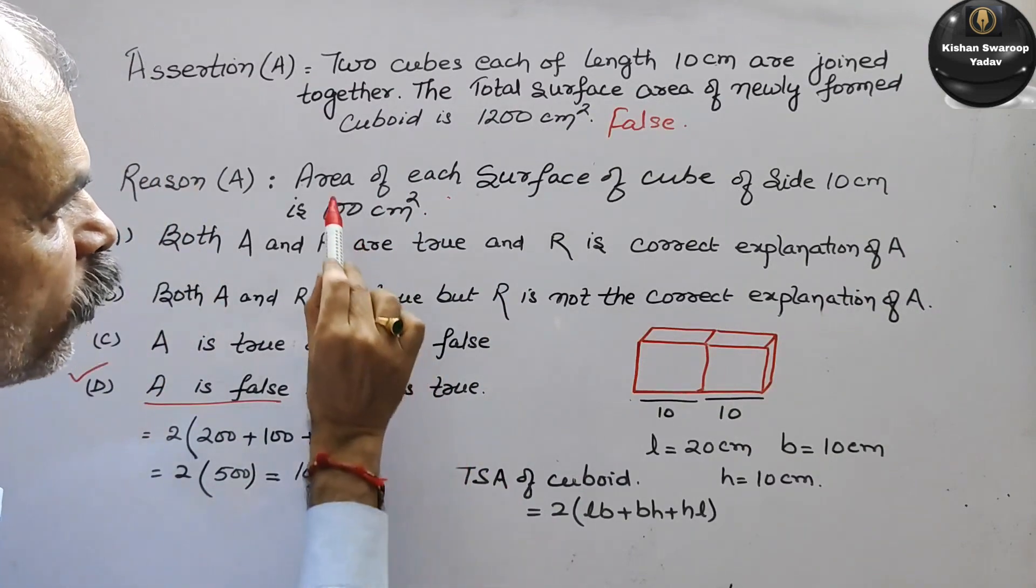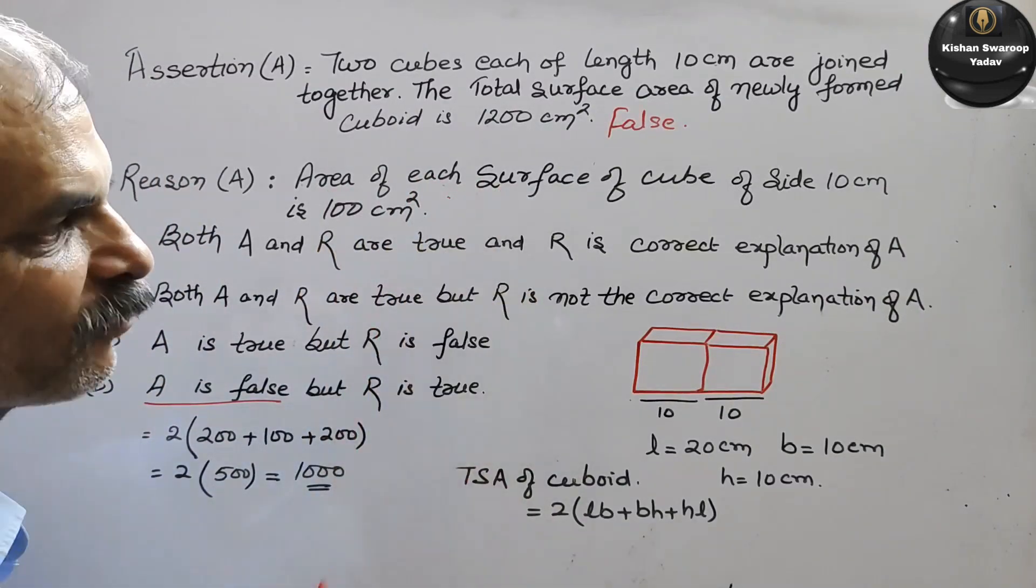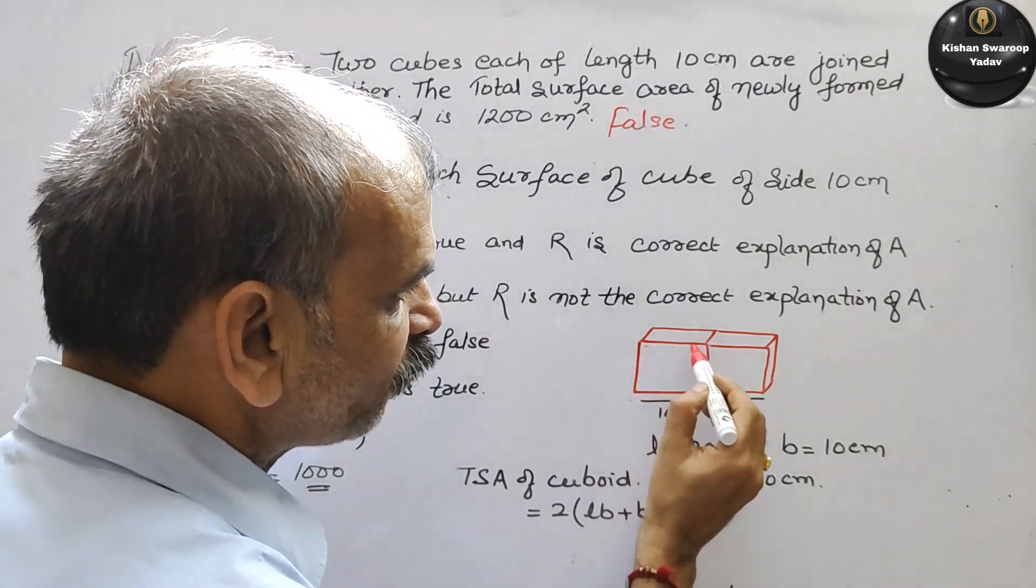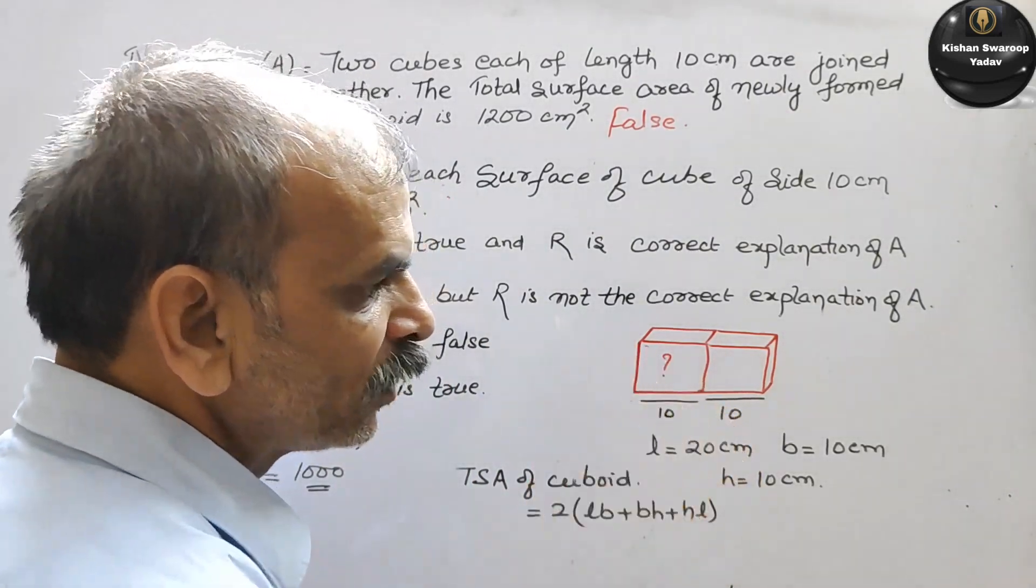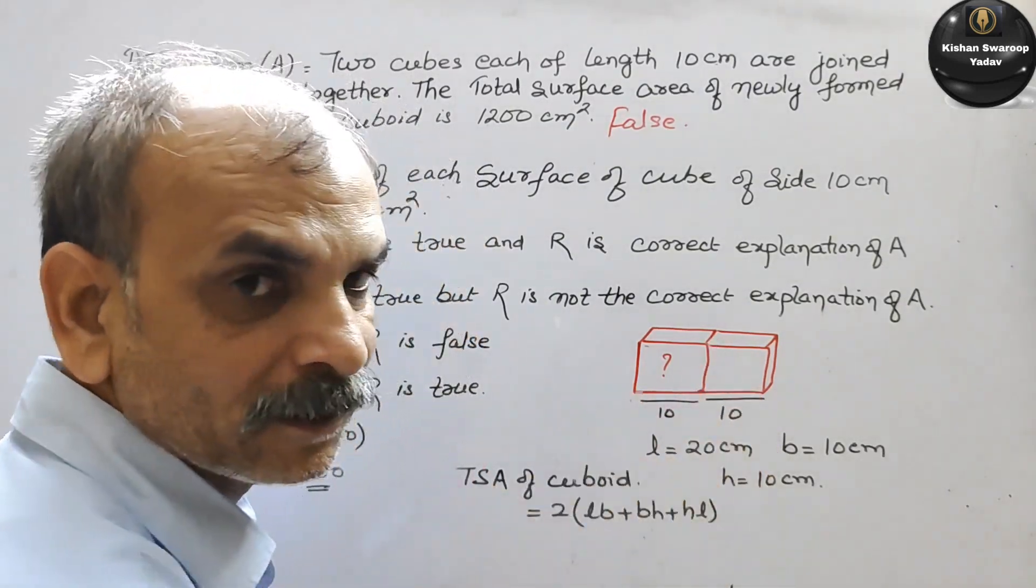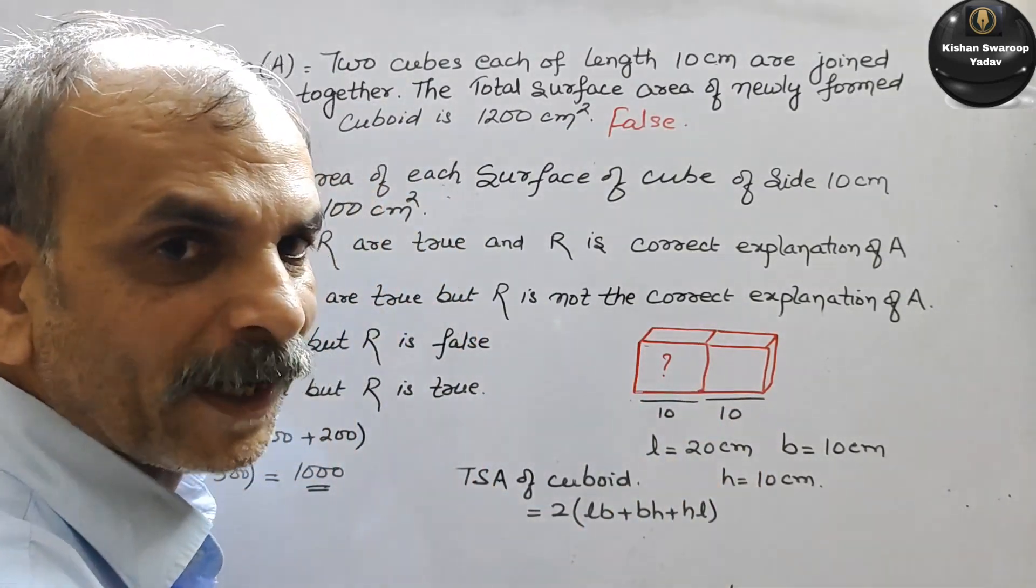But if we check it: it says area of each surface. One surface - suppose you have taken the first front face. In this, you have length and height, so length into height only.